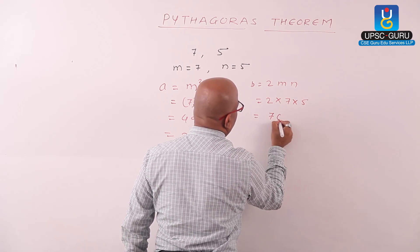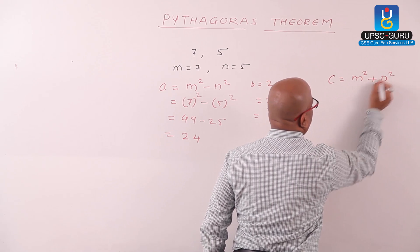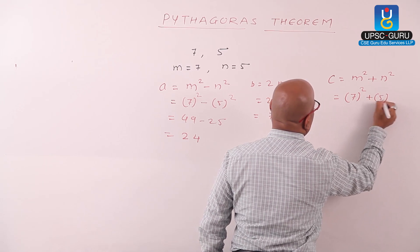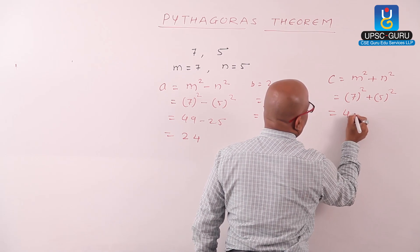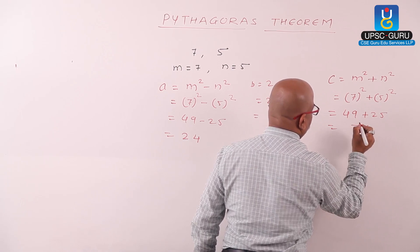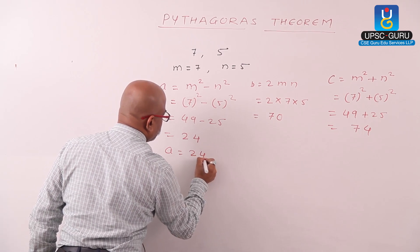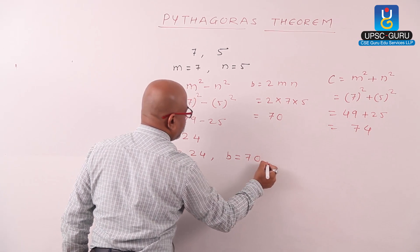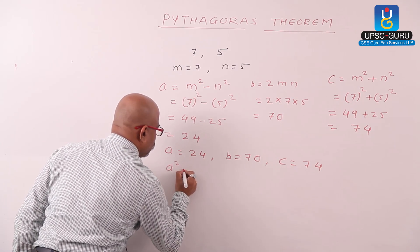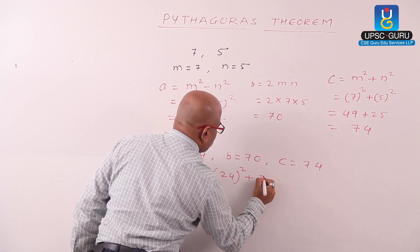The second number b is 2mn: 2 times 7 times 5 equals 70. The third number c equals m squared plus n squared: 7 squared plus 5 squared equals 49 plus 25, which is 74. Now let us check: a equals 24, b equals 70, and c equals 74. We compute a squared plus b squared, that is 24 squared plus 70 squared.